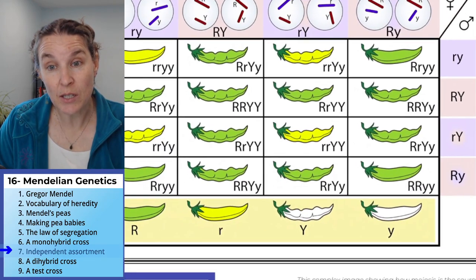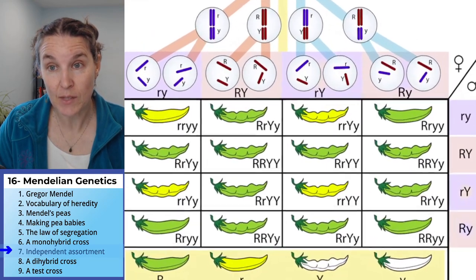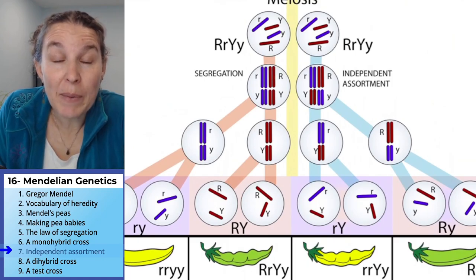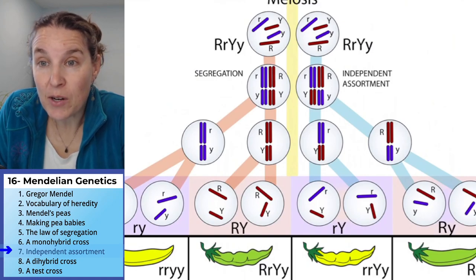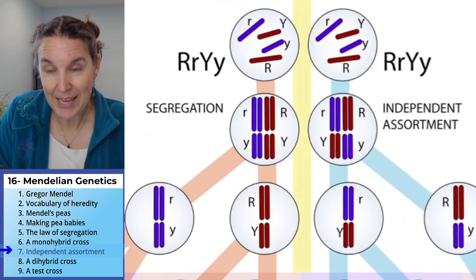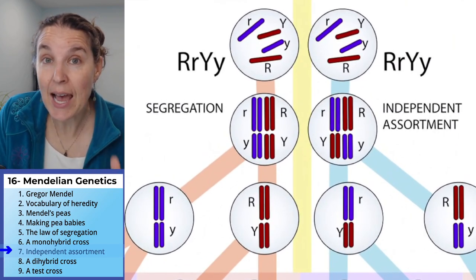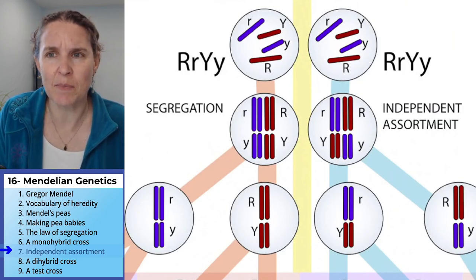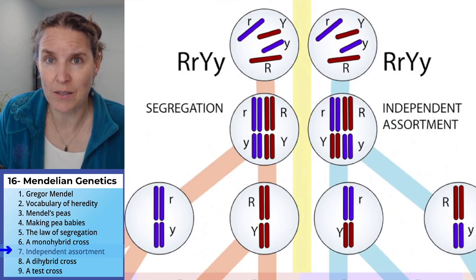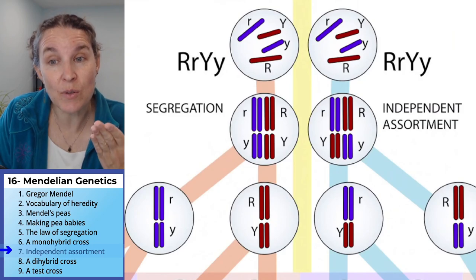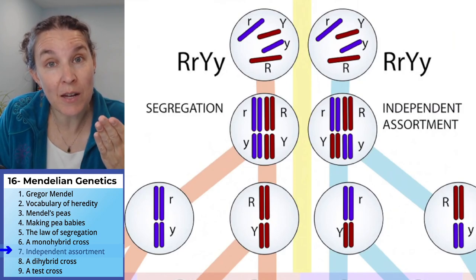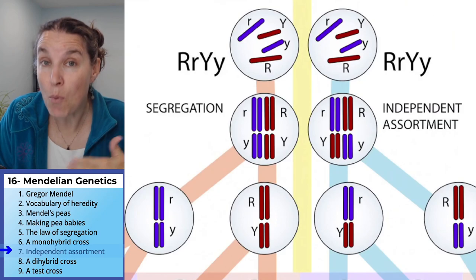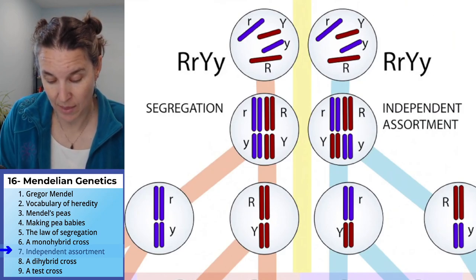The two traits we're going to look at are color and crinkledness. That means we're going to deal with two pairs of homologous chromosomes. Look up there carefully — you can see that independent assortment is how we end up with more possible gametes than you might think. Depending on how those homologues line up on the metaphase plate, that's independent assortment, and it gives us more possible gametes.